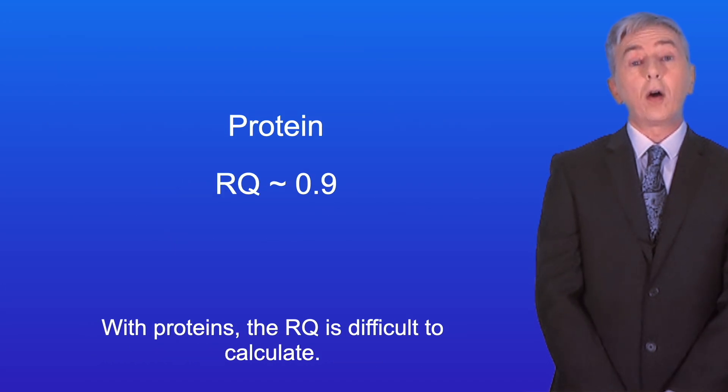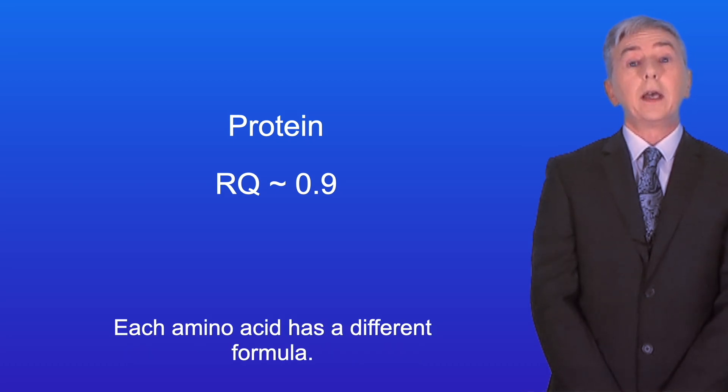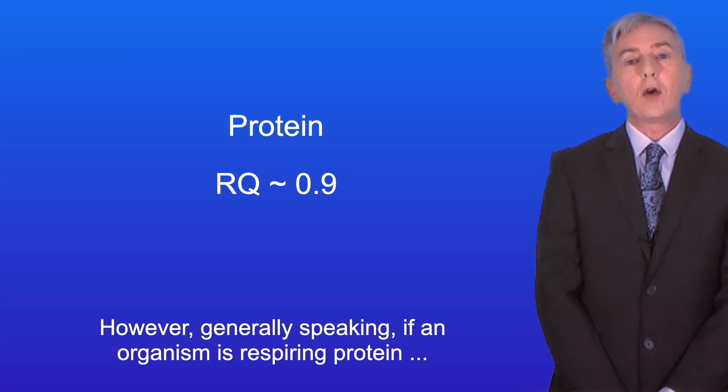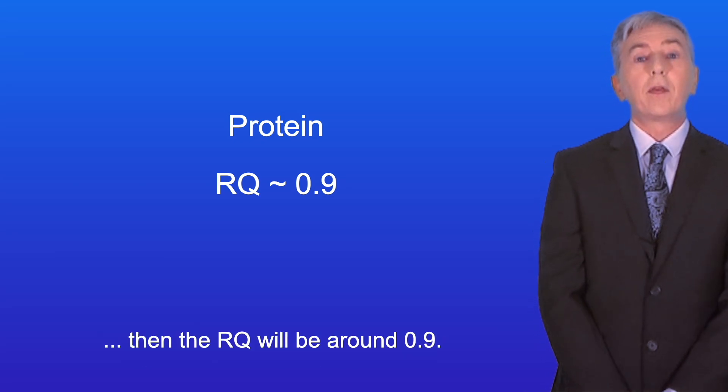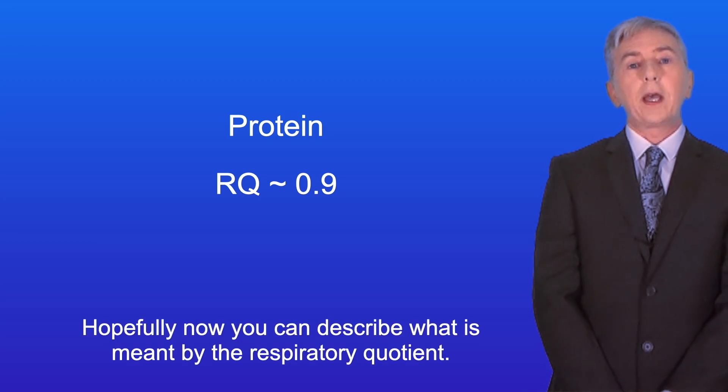With proteins, the RQ is difficult to calculate. That's because different proteins contain different amino acids, and each amino acid has a different formula. However, generally speaking, if an organism is respiring protein, then the RQ will be around 0.9. Hopefully now you can describe what's meant by the respiratory quotient.